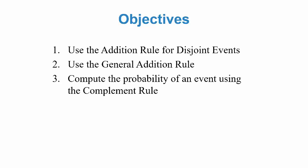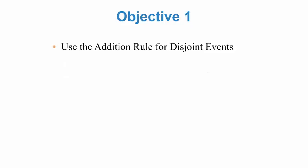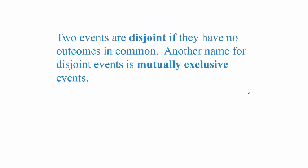Our objectives for this section are three: we want to use the addition rule for what we call disjoint events, we want to use the general addition rule, and then we want to compute the probability of an event using what we call the complement. Let's start with that first objective — using the addition rule for disjoint events.